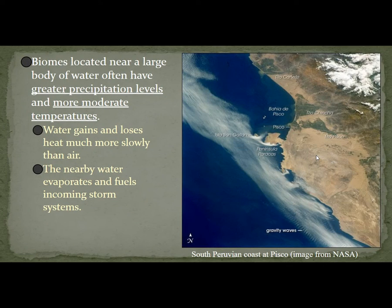Biomes located near a large body of water often have greater precipitation levels and more moderate temperatures. Water gains and loses heat much more slowly than air, and the nearby water evaporates and fuels incoming storm systems, so water is a regulator of temperature.